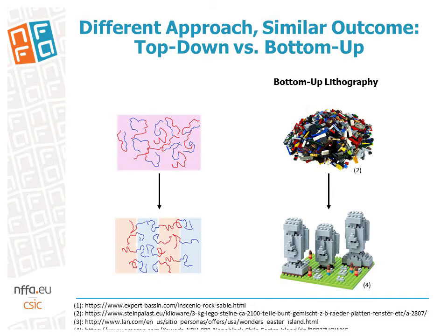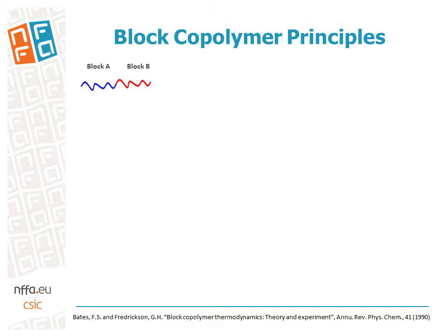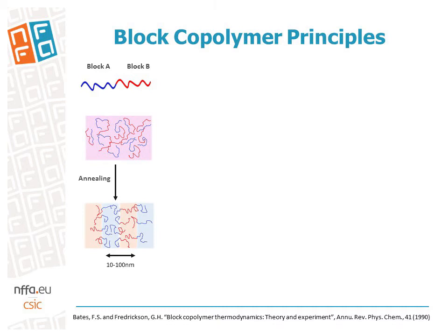We make use of the principle of self-assembly to induce order in an otherwise disordered sample. A block copolymer is formed of two or more homopolymer chains joined together through a covalent bond. If the materials of the two blocks in the block copolymer are immiscible, like oil and water, they would be able to phase-separate.